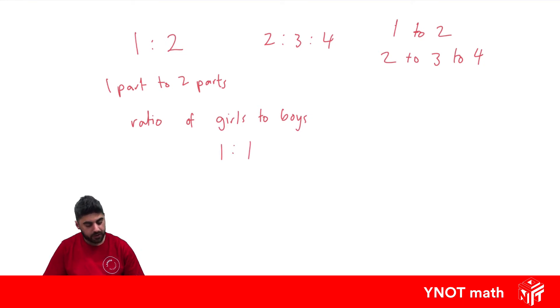And what this means is that for every one girl, there is one boy. It doesn't mean that there's only one girl and one boy in the class. It just means that for every one girl, there is one boy.